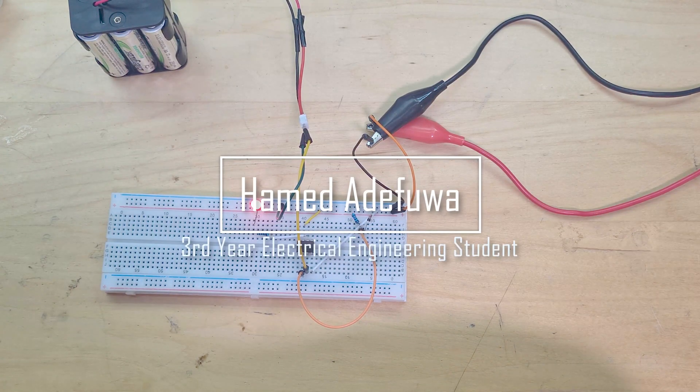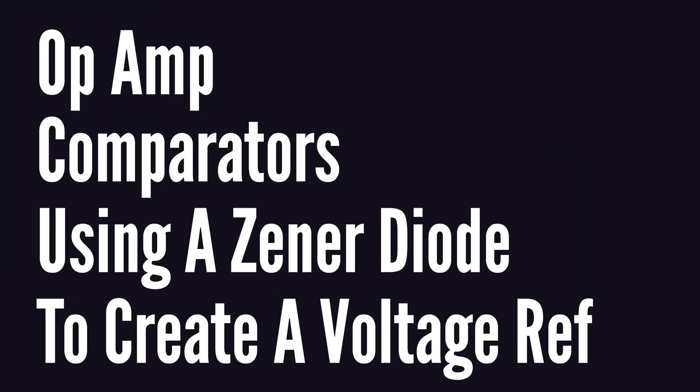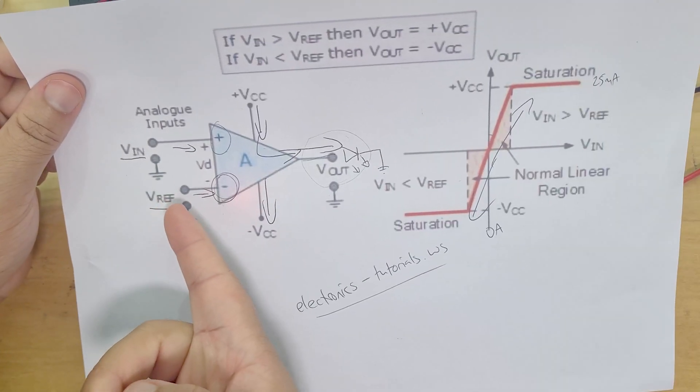Hi everyone, welcome back to another video. We're still going through comparators. I'm having a lot of fun with this and learning a bunch, so I hope you are too. In the first video we covered comparators at a basic level, just what they are and sticking two voltages into each of the inputs, comparing them and outputting to turn on an LED.